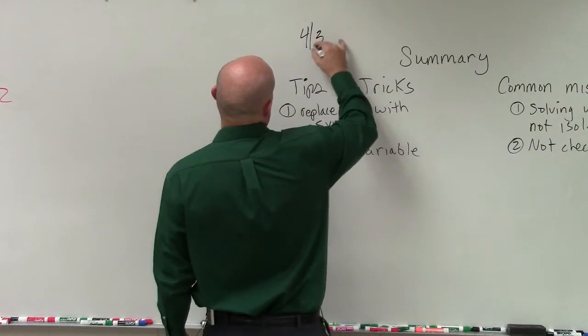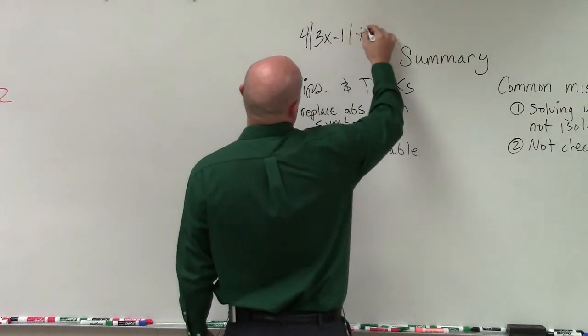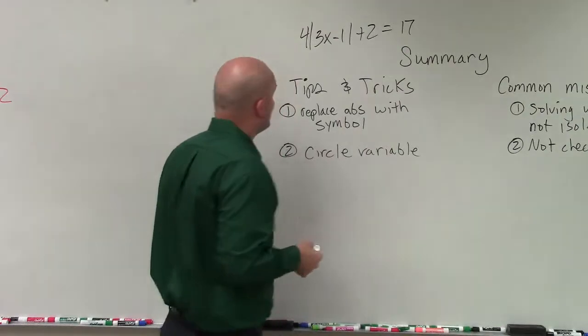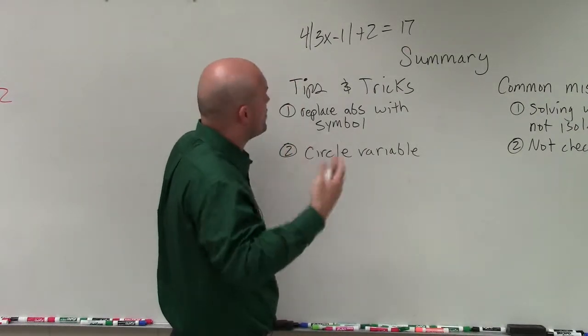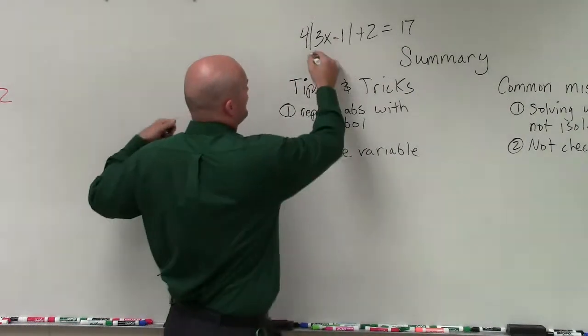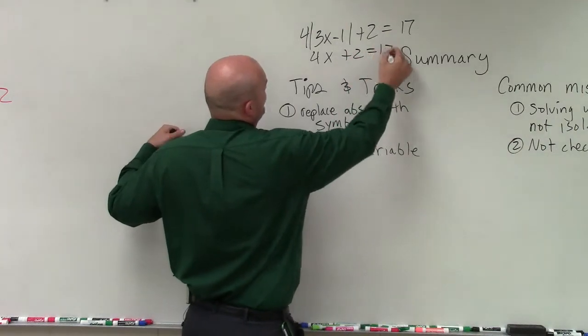4 absolute value of 3x minus 1, plus 2 equals, I don't know, 17, whatever. Well, a lot of times they just have trouble with so many things going on that you can rewrite it with 4x plus 2 equals 17.